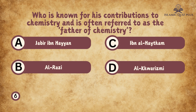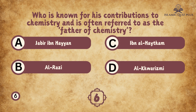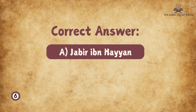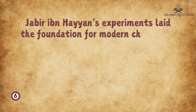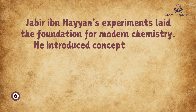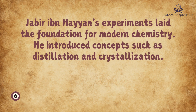Question 6: Who is known for his contributions to chemistry and is often referred to as the father of chemistry? A. Jabir ibn Hayyan, B. Al-Razi, C. Ibn al-Haytham, D. Al-Khwarizmi. The correct answer is A. Jabir ibn Hayyan. His experiments laid the foundation for modern chemistry. He introduced concepts such as distillation and crystallization.